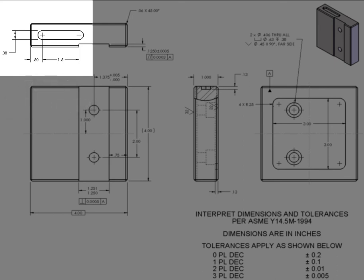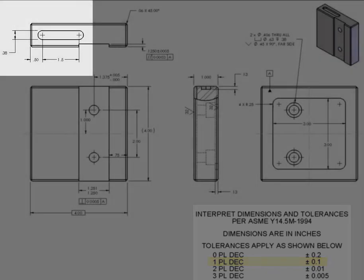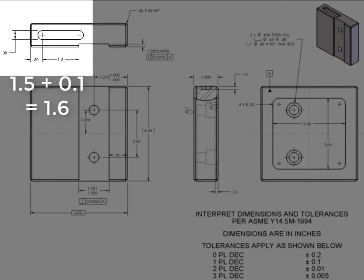The inch and a half center-to-center slot length has one decimal place, so its tolerance on the slot length is 0.2 inches. Its minimum feature size is 1.4 and its maximum feature size is 1.6 inches.